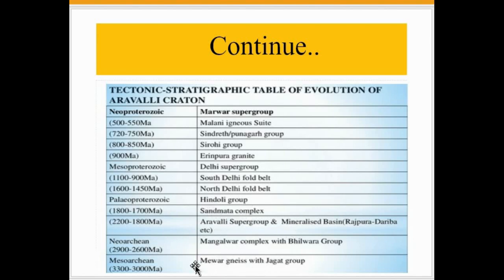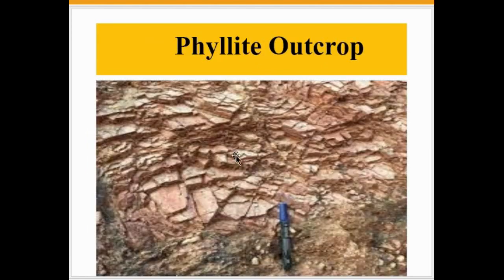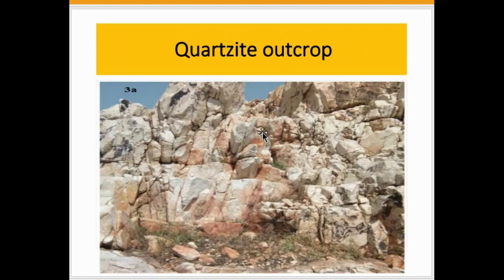These are some rock types from the Aravalli Supergroup. This is a ferruginous quartzite outcrop, this is a phyllite outcrop, and this is a quartzite outcrop from the Aravalli Supergroup.